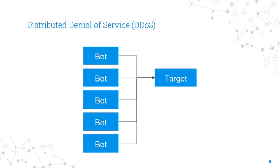Pretty much any application that a malicious hacker can access might become the target of a DDoS. The malicious hacker's goal is to overwhelm system resources on target servers so they can no longer process legitimate traffic, effectively making the system inaccessible.